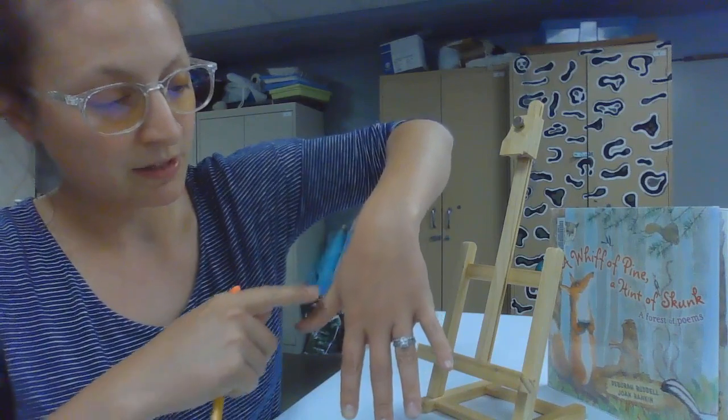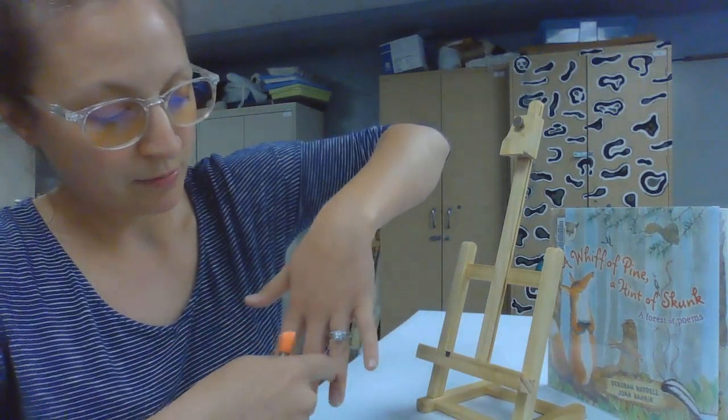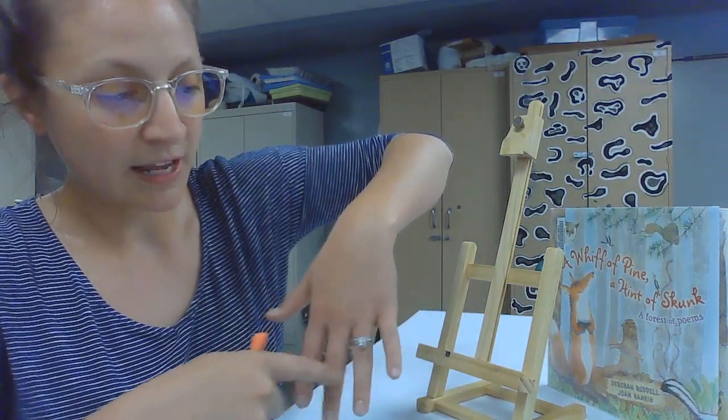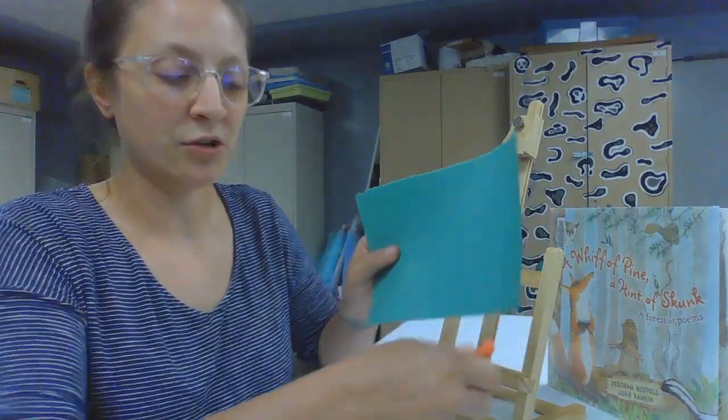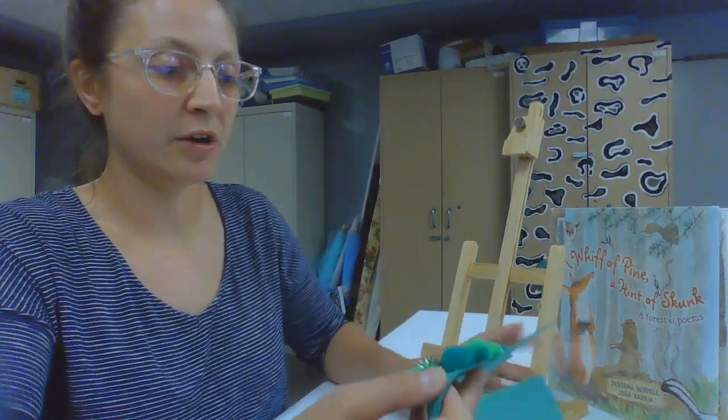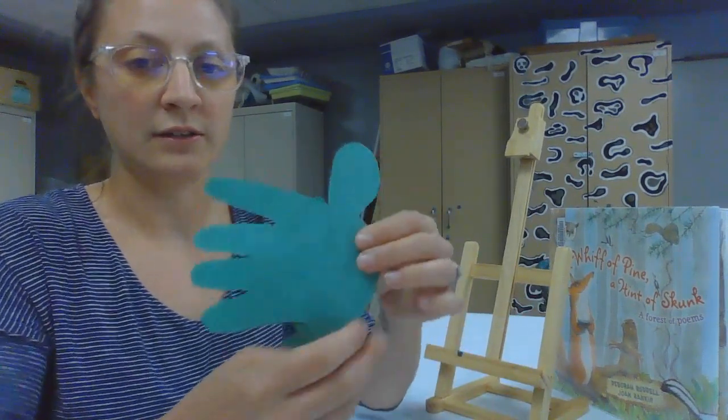So this is going to be the tail, and these are going to be the four legs of the turtle. So leave a little bit on the side of your green paper, because that's where we're going to cut out his little head.